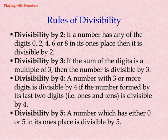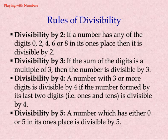Rules of divisibility — Divisibility by 2: if a number has any of the digits 0, 2, 4, 6, or 8 in its ones place, then it is divisible by 2. Divisibility by 3: if the sum of the digits is a multiple of 3, then the number is divisible by 3. Divisibility by 4: a number with 3 or more digits is divisible by 4 if the number formed by its last two digits (ones and tens) is divisible by 4. Divisibility by 5: a number which has either 0 or 5 in its ones place is divisible by 5.